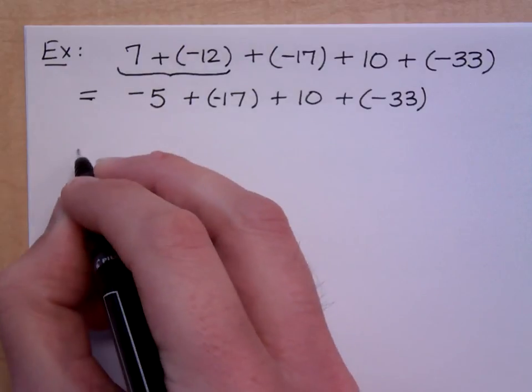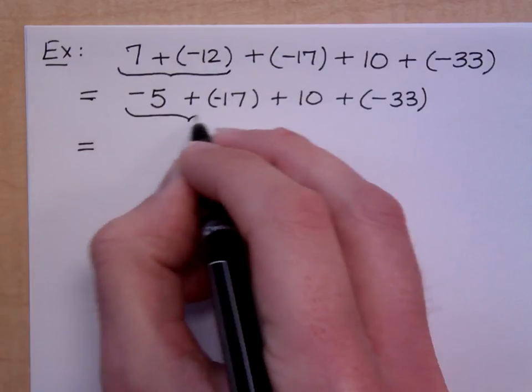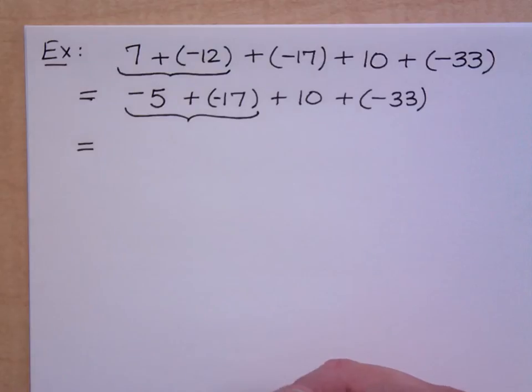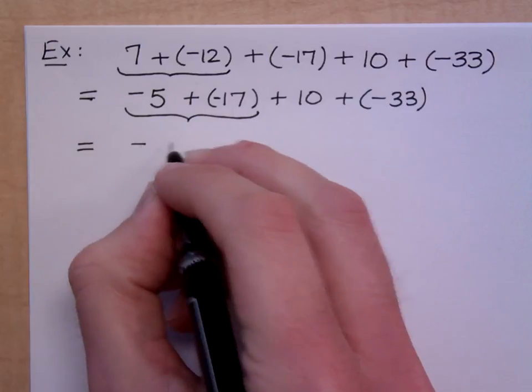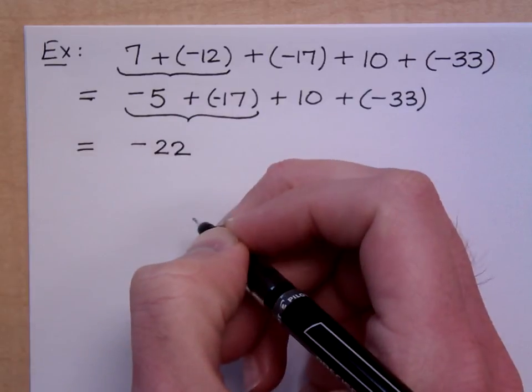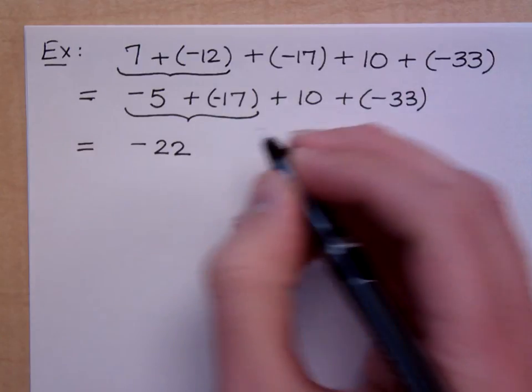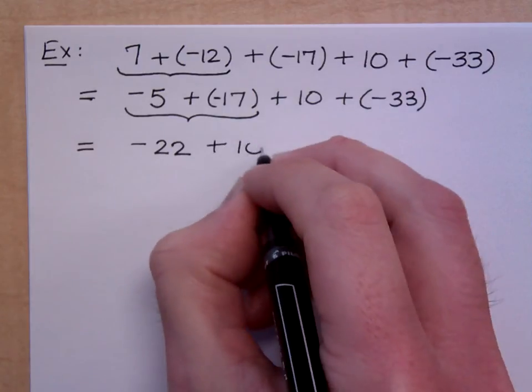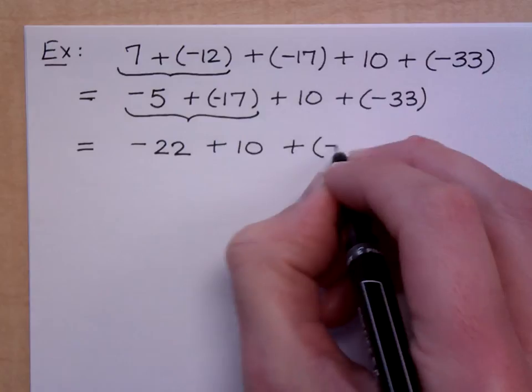What about combining these next two terms? What's a negative 5 and a negative 17? Negative 22. You say that with a question mark. Negative 22. All right. Because they're both negative, right? You lose 5, you lose 17, you've lost 22, right? And then I still have the plus 10 and the plus negative 33.